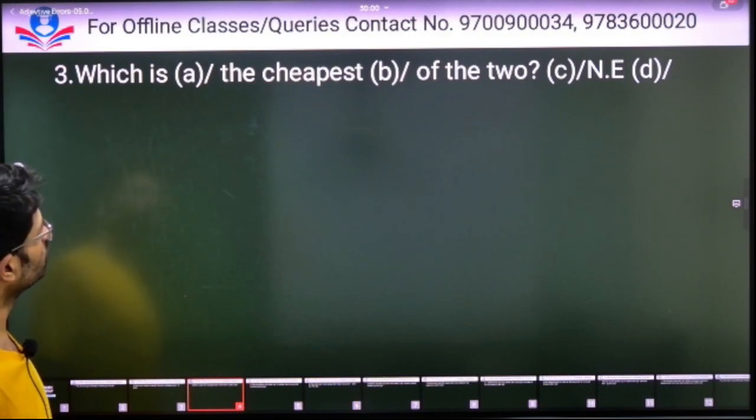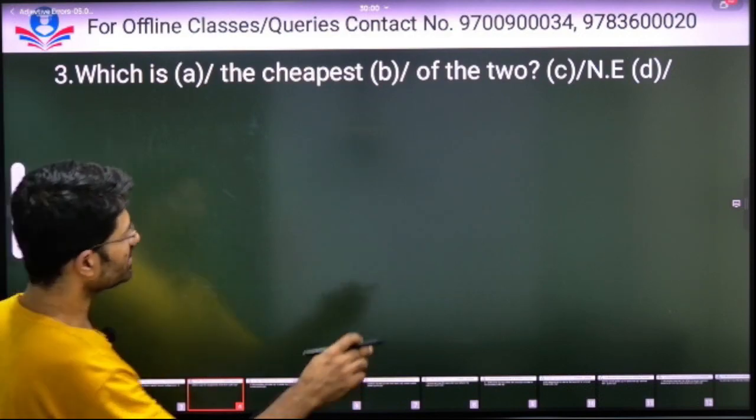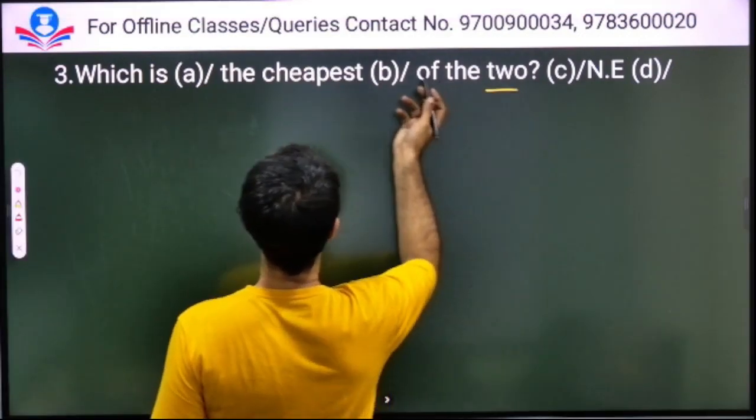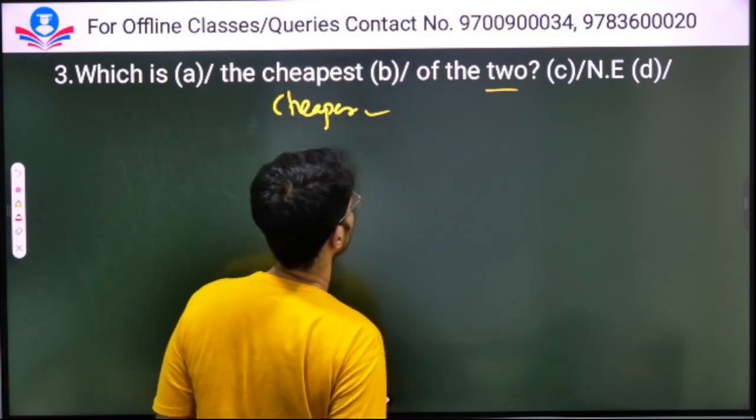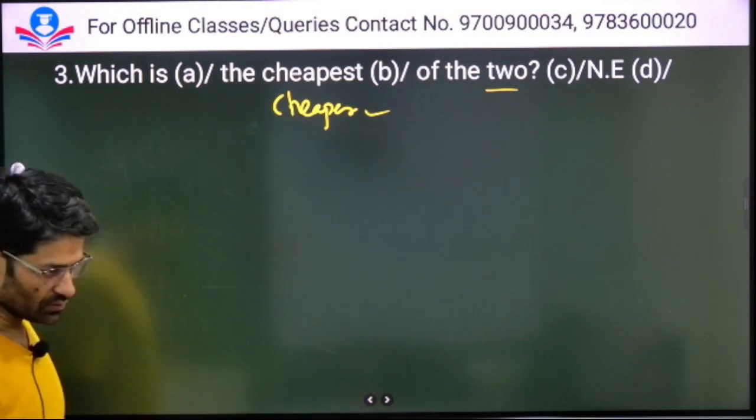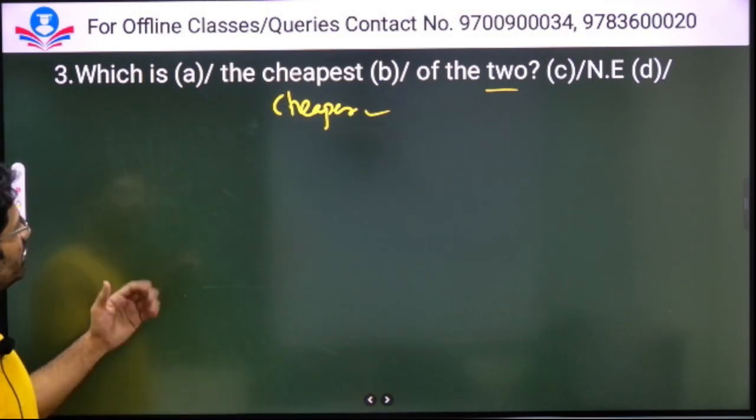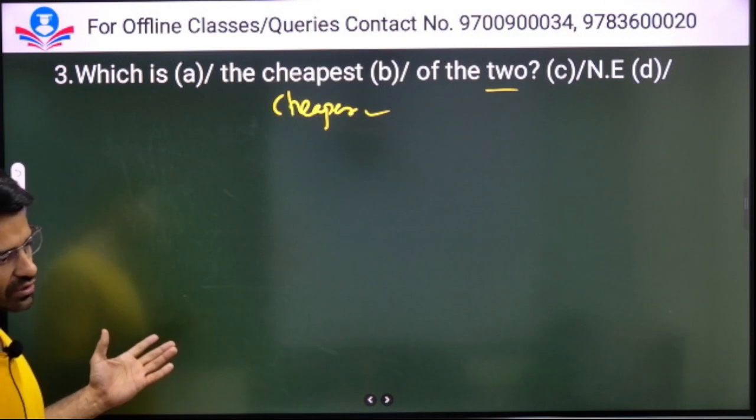Which is the cheapest of the two? There are two things, no? Cheapest won't come. Cheapest is the superlative degree. With two, we use the comparative, so it should be 'cheaper'. We will use the comparative with two, not superlative degree.